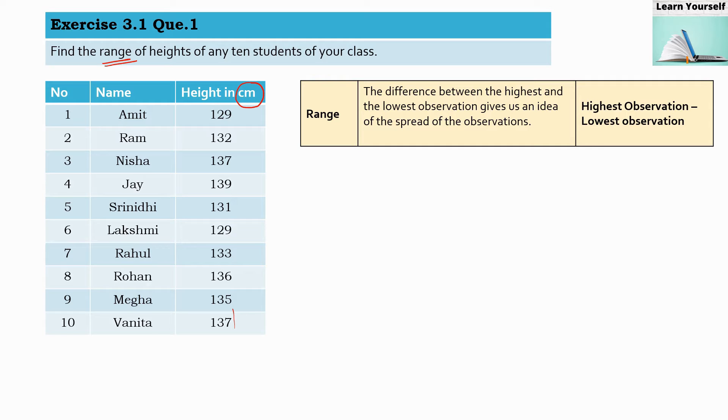Highest observation minus lowest observation will give us range. So first, from this data, we have to find out what is the maximum height, or what is the highest observation, and what is the minimum height, that means what is the lowest observation.